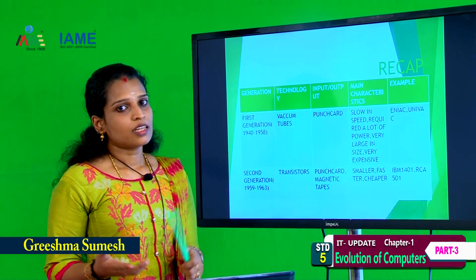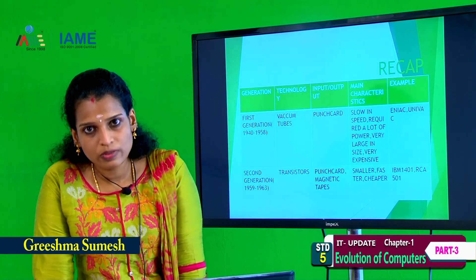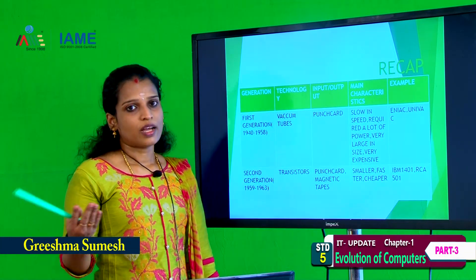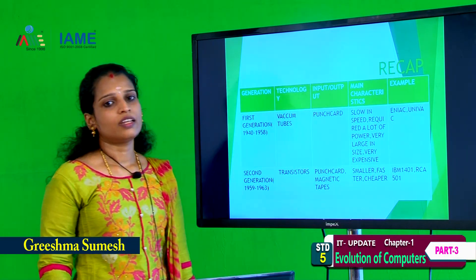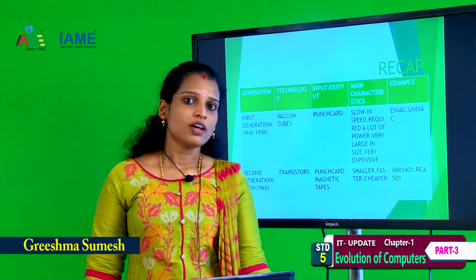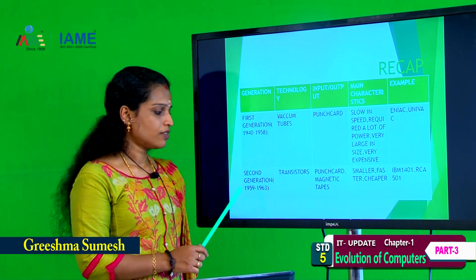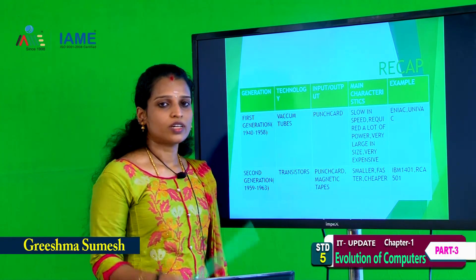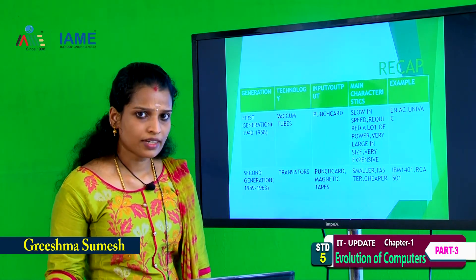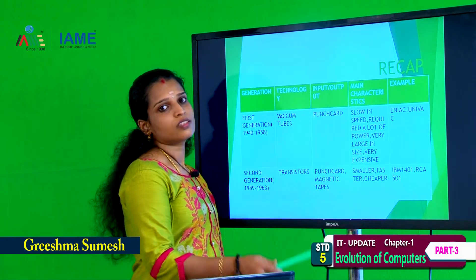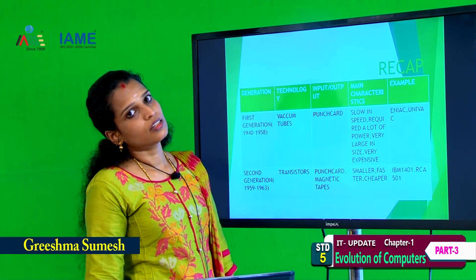Quick recap: First generation computer, 1940 to 1958, used vacuum tubes. Input and output devices are punch card. Slow in speed, required a lot of power, very large in size, very expensive. Examples: ENIAC, UNIVAC. Second generation computer, 1959 to 1963, used transistors. Input and output devices are punch card and magnetic tape. Smaller, faster, cheaper. Examples: IBM 1401, RCA 501.